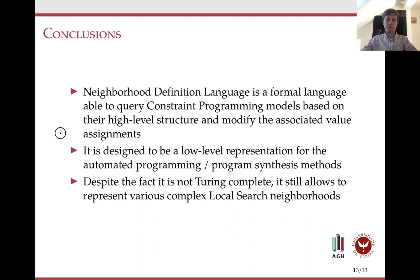Conclusions. We have created and defined a new language, the neighborhood definition language, that is able to query constraint programming models based on high-level structure and then modify the associated value assignments. It is designed to be a low-level representation accessible to automated programming methods. And despite the fact it is not complete, it still allows representation of various complex local search neighborhoods. Thank you for your attention and time. I hope for a fruitful discussion. Bye.